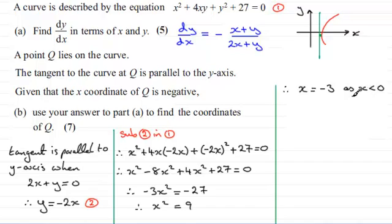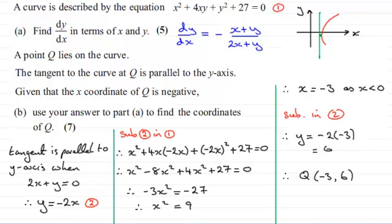So if x is minus 3 then I've just got to substitute this into equation 2 and that gives us the corresponding y coordinate: y will equal minus 2 times minus 3 which is going to give us 6. So therefore the coordinates of Q is going to have coordinates x being minus 3 and the y coordinate is going to be 6.